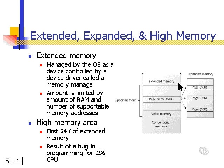Extended memory is memory that is above the 1024K limit. We have a lot of extended memory in the computers that we have today. It's managed by the operating system, and the amount is limited by the RAM and the number of supportable memory addresses. Expanded memory happens when we move data out of extended memory and into upper memory just in time for an application to use that memory.